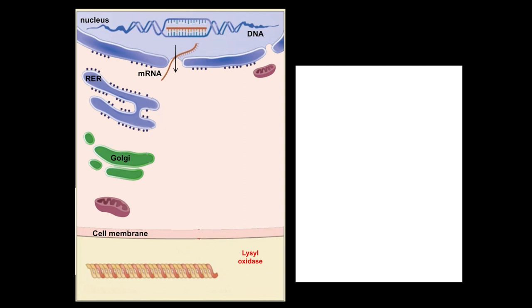Mutations in any involved genes or mistakes in post-translational processing can lead to either insufficient amounts or abnormal collagen synthesis, leading to many different pathological conditions. Understanding the steps of collagen synthesis is worth spending time on, and this is also highly testable on Step 1. Different pre-pro-collagen alpha chains are synthesized from related genes in the nucleus and translated in the rough endoplasmic reticulum. To prepare collagen for its final assembly in the extracellular matrix, a number of post-translational modifications must take place in the rough endoplasmic reticulum and the Golgi.